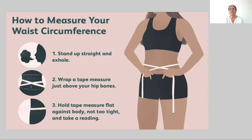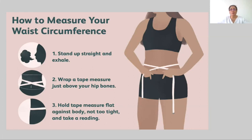Let us see how we need to measure the waist circumference — and this is not exactly the waist where your tailor measures you. To measure correctly, stand up straight, exhale and release the existing air, then wrap a tape measure just above your hip bones. Those are the bony prominences on either side just above the pelvic region. Place the tape there, hold it flat against the body — not too tight — and take a reading in inches.